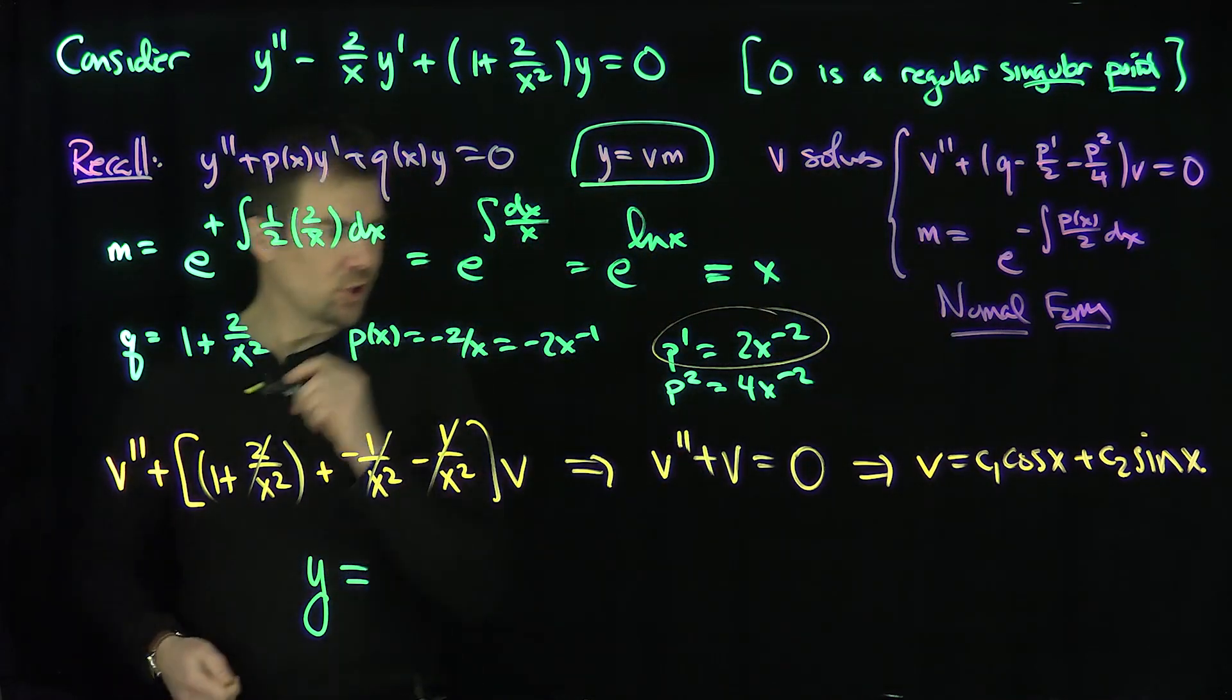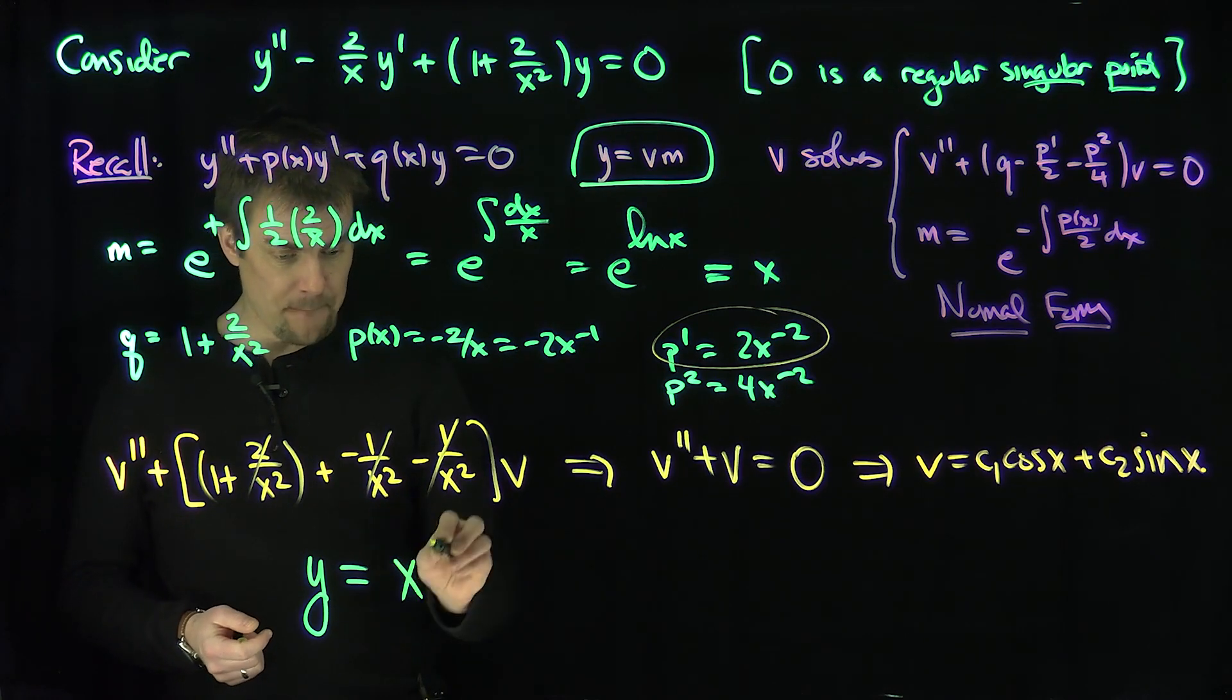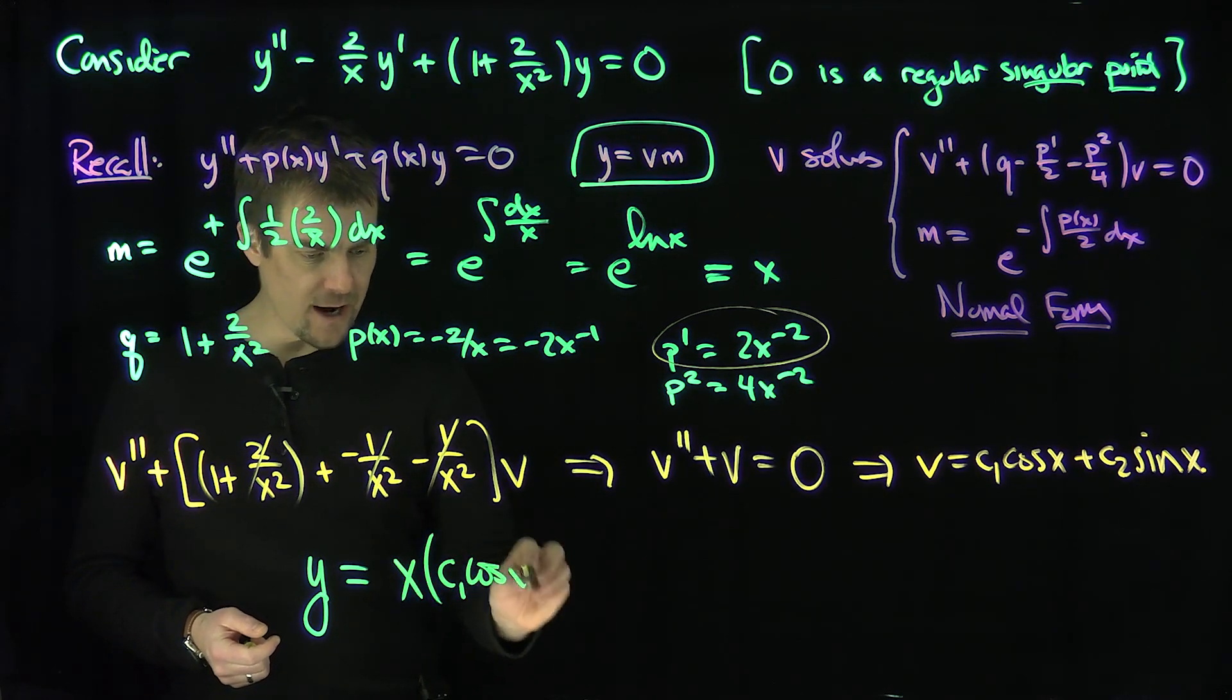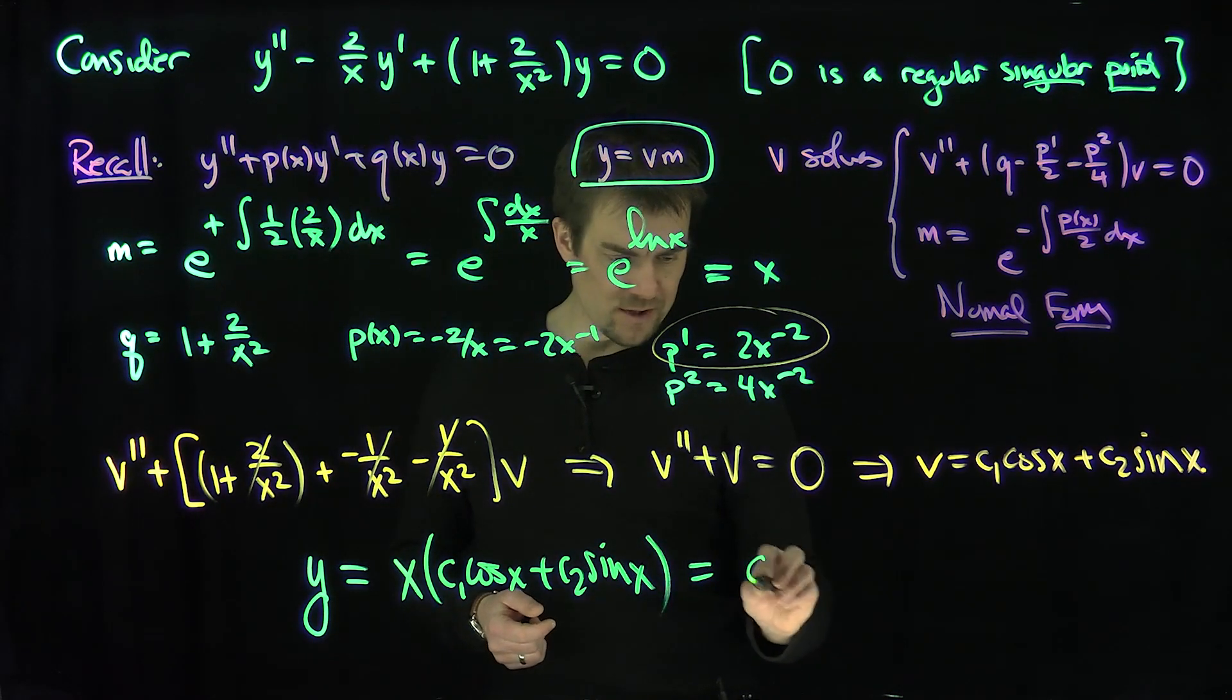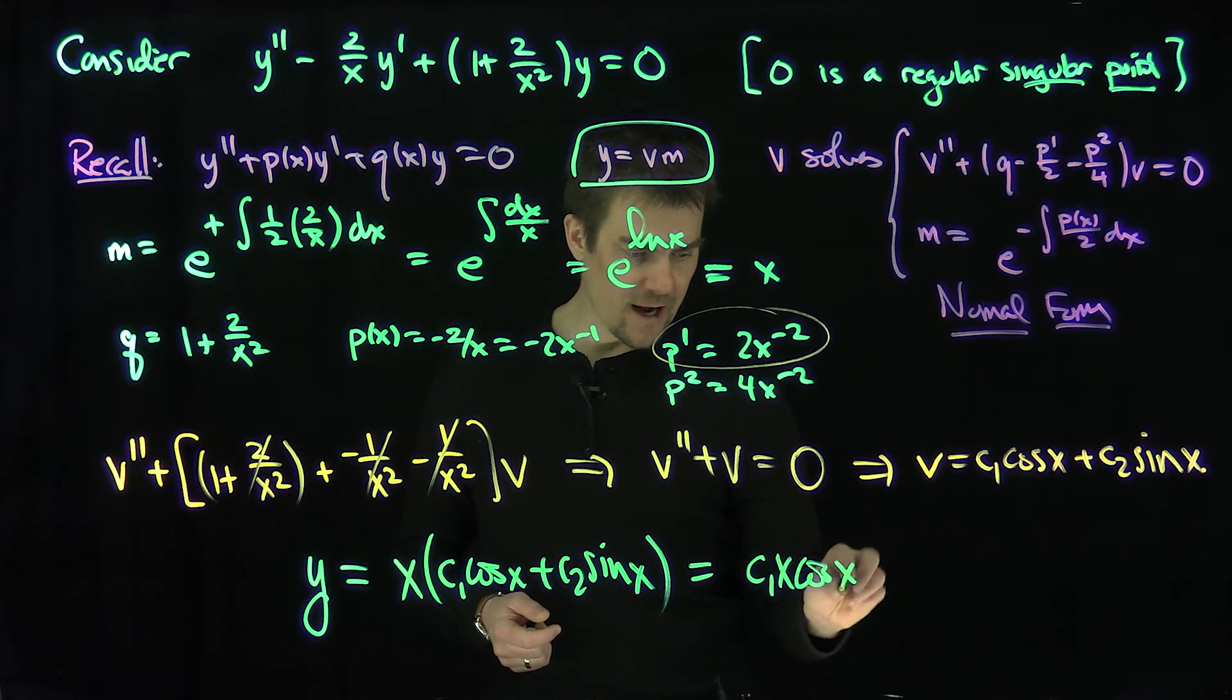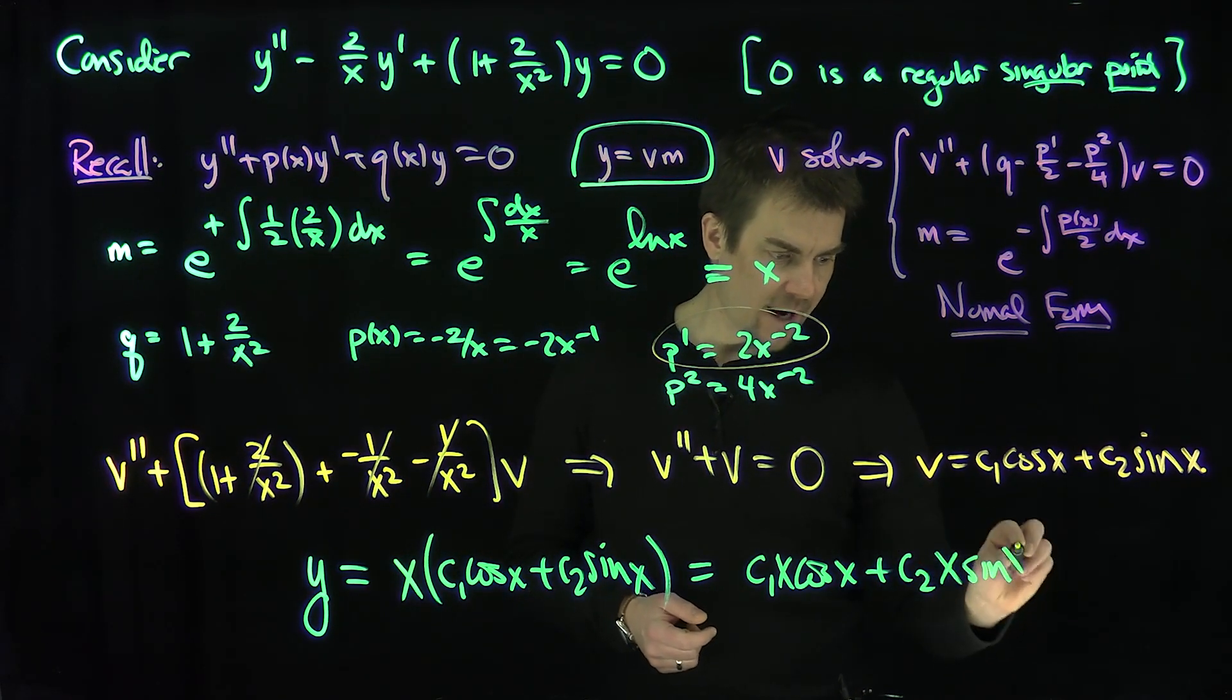So what will y be? y is v times x, that's my multiplier m. And c₁cos(x) + c₂sin(x) is my v. So the general solution is y = c₁x·cos(x) + c₂x·sin(x).